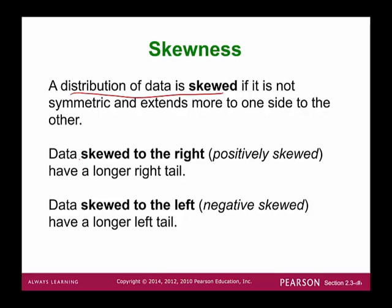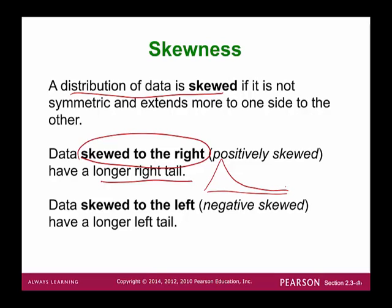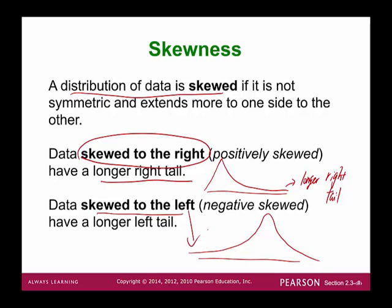We have skew to the right, meaning positively skewed, when there is a longer right tail. That means most of the data are condensed on the left-hand side. We also have skew to the left, when there is a longer left tail. In that case, most of the data will be located on the right-hand side of the center.